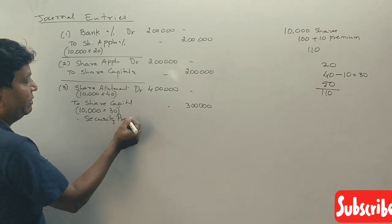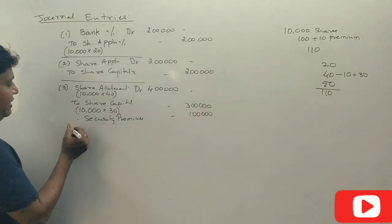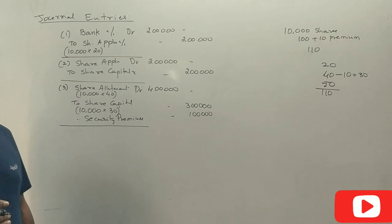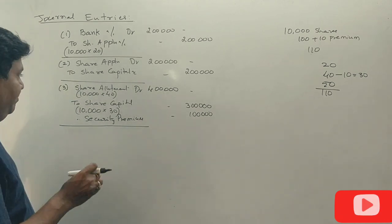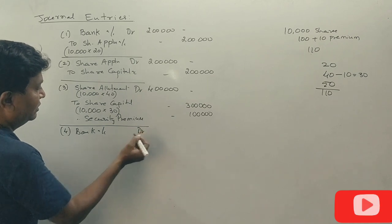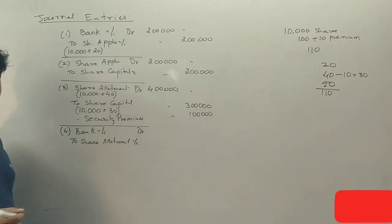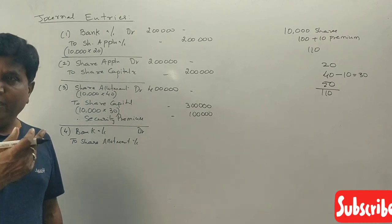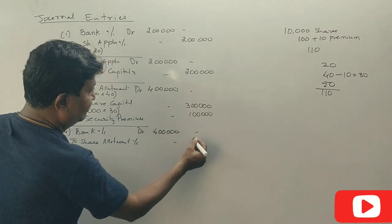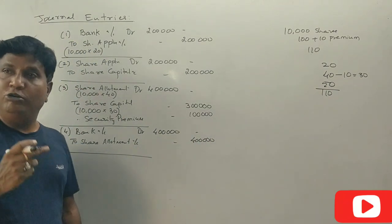Security premium — share allotment money due along with premium. Share allotment money with premium due. Bank account debit to share allotment account — ₹4 lakhs. Narration: share allotment money received. Application and allotment entries are now complete.